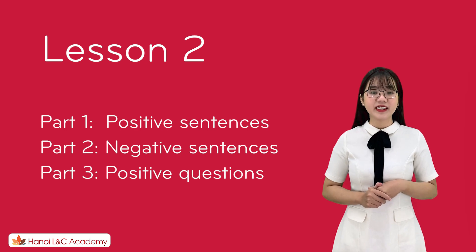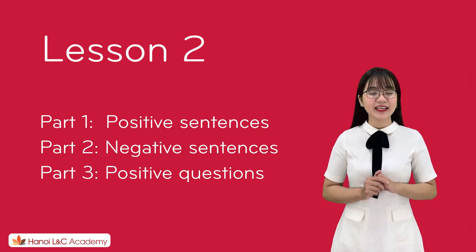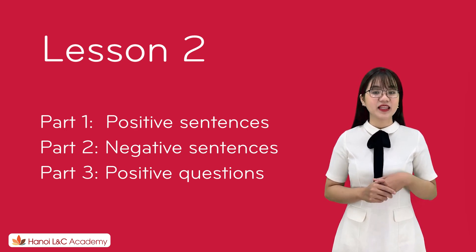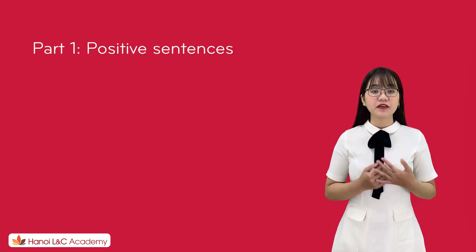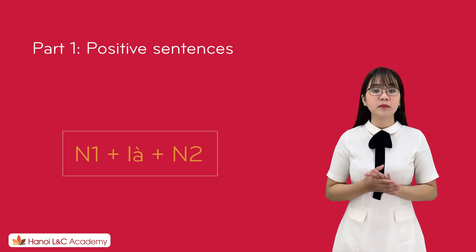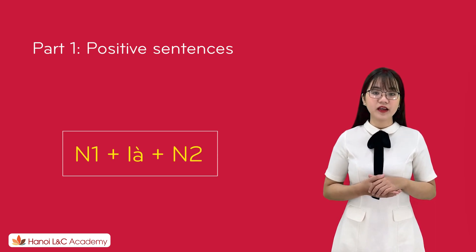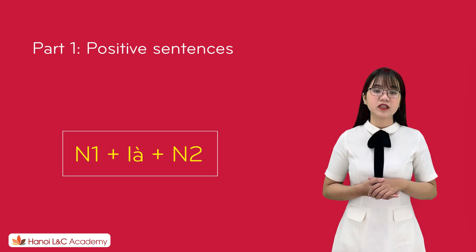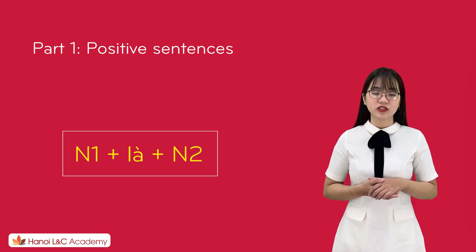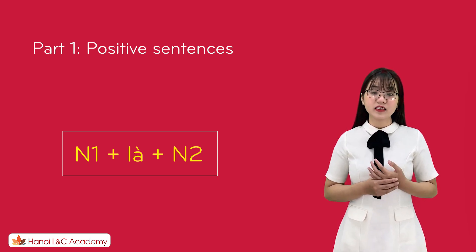Remember in Lesson 1, we have 'là' in Vietnamese Quang Nga. So in this lesson, I will give you 'không phải là' in Vietnamese Quang Nga. The verb 'là' is the most basic verb that every learner has to know when they learn Vietnamese for the first time. But it's not easy to make the right sentence with this verb because it's not the same as 'to be' in English.